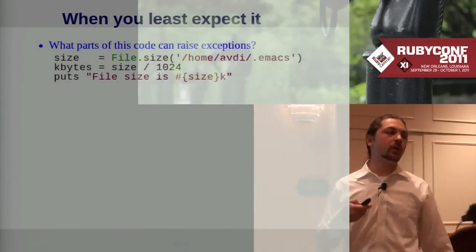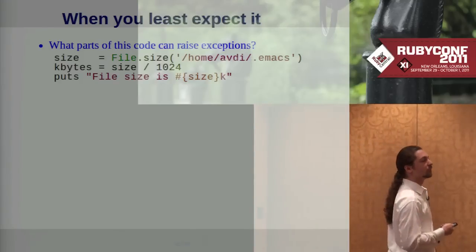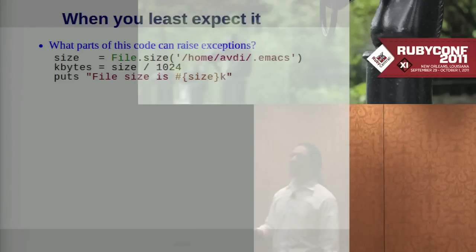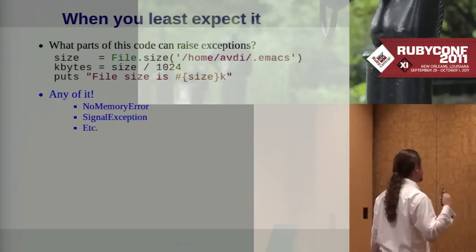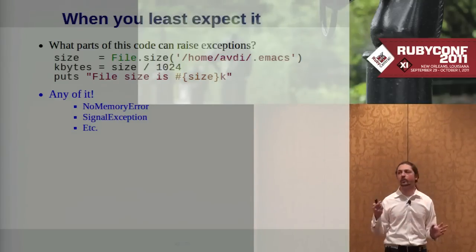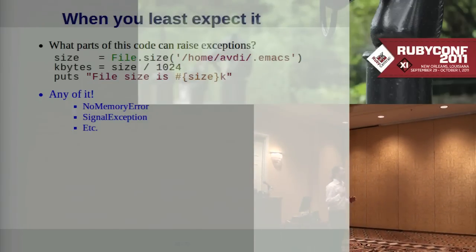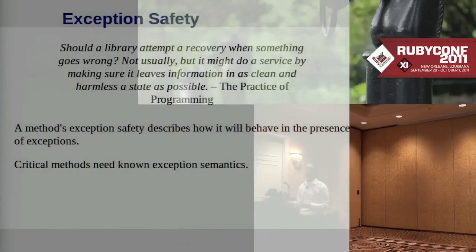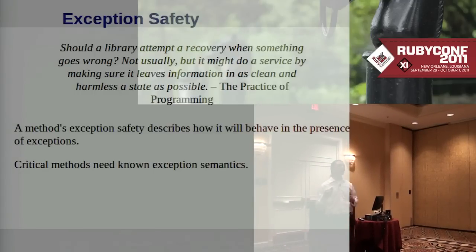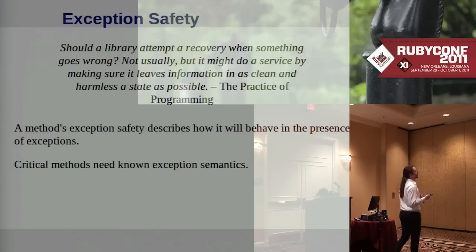Pop quiz: what parts of this code can raise an exception? The answer is all of it. Because in Ruby there are certain exceptions which can be raised at any point in the code. Things like NoMemoryError — if you run out of memory, that can be raised anywhere. SignalException — somebody presses Control-C on the keyboard and that signal exception can pop up anywhere. This is a little scary, because sometimes we have methods which are important — especially exception reporting methods — that we really don't want messing things up further when an exception is raised.